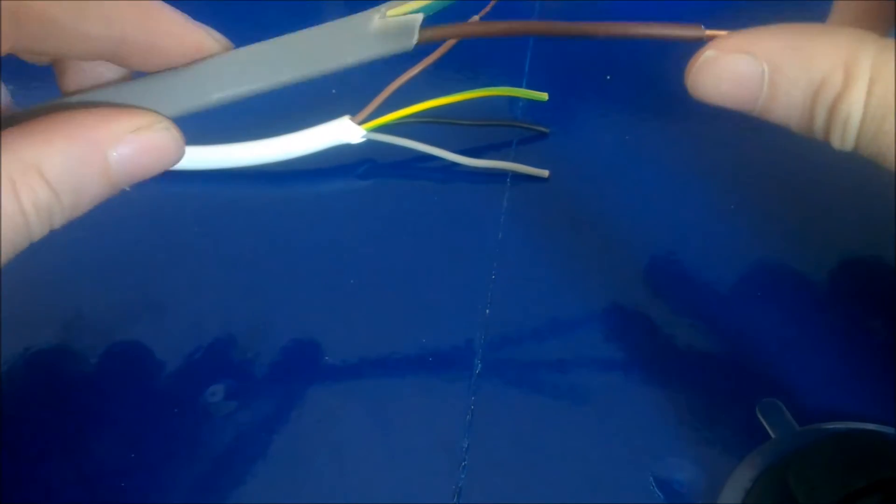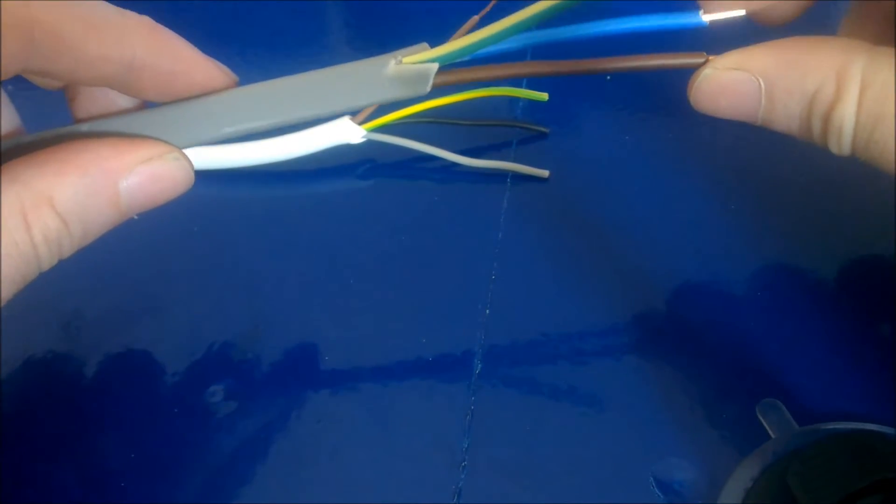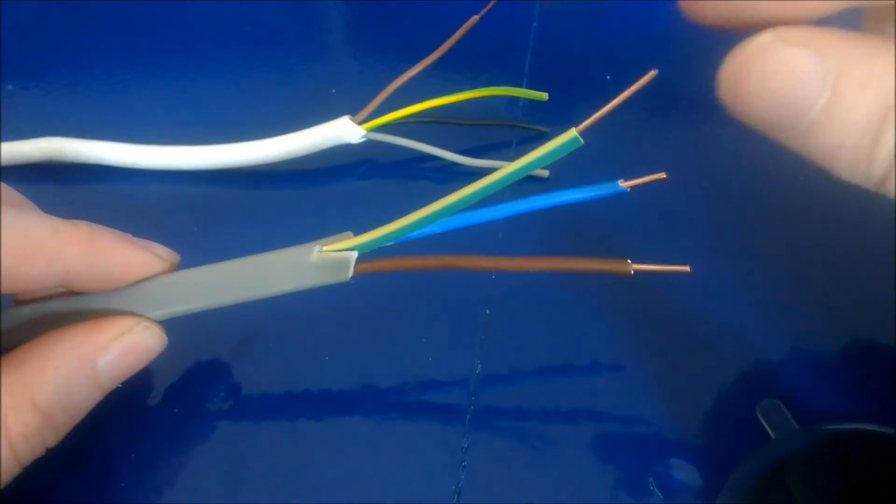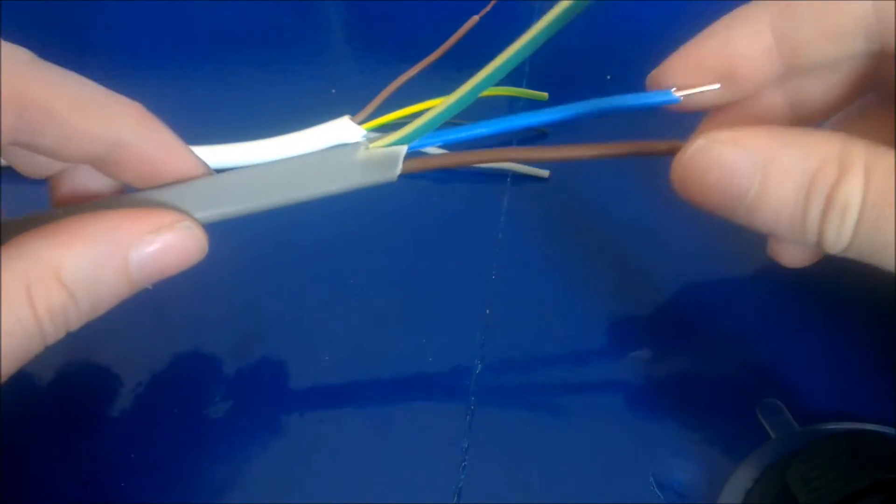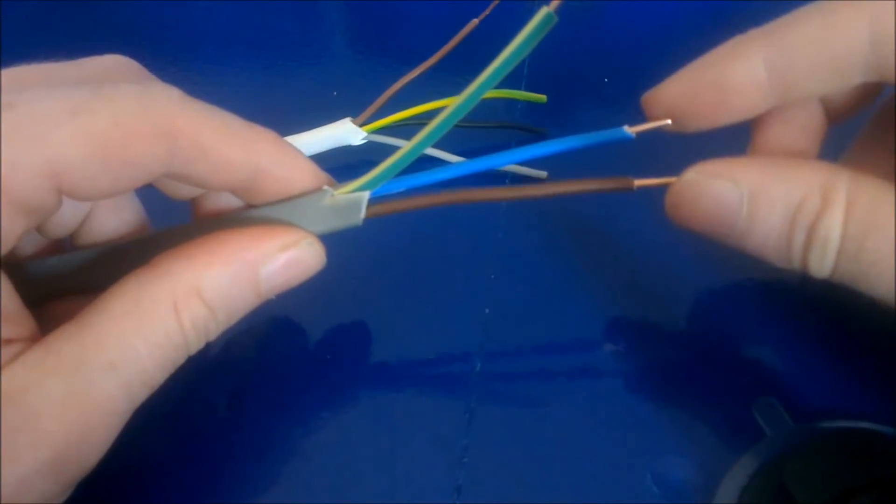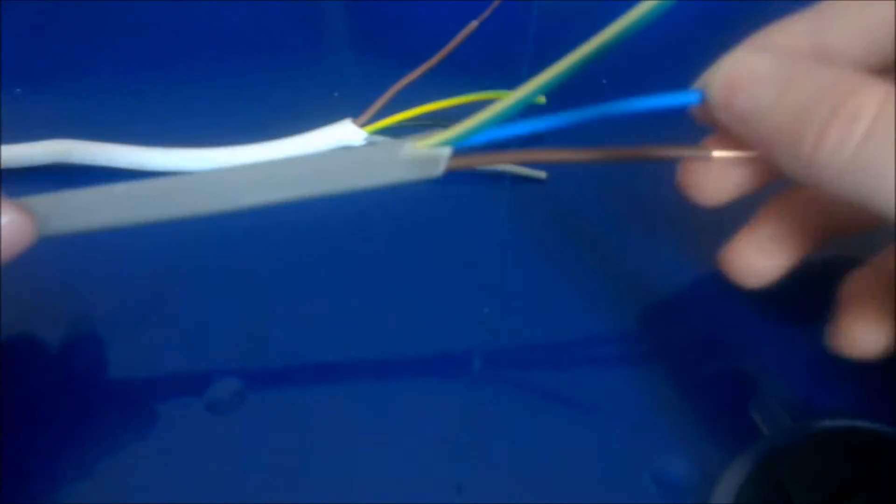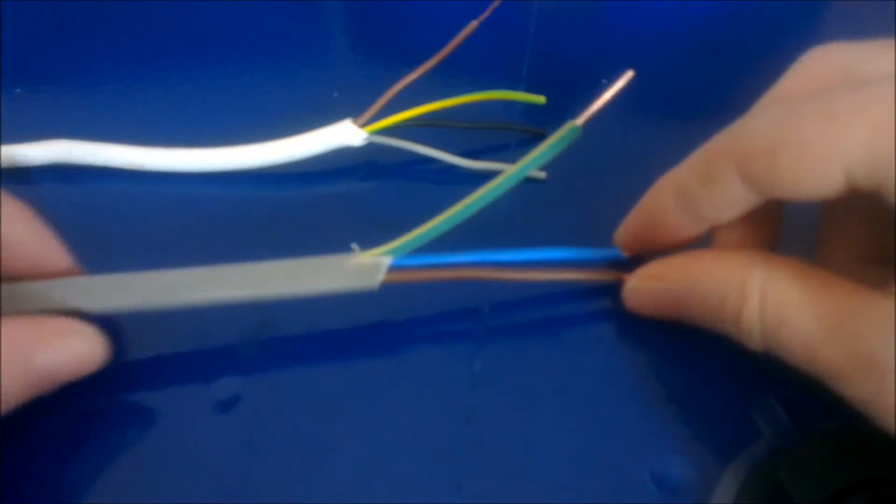So two cables, live and neutral, are 2.5mm, and then your earth is 1.5mm. It doesn't have to be as big as the live and neutral cables. It's installed in a ring circuit, so it leaves the board—live and earth leave the board, round each circuit, and back to the board.